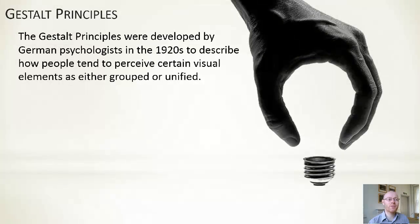So we'll start off first of all looking at the Gestalt principles. They're about a hundred years old. They actually were developed by German psychologists back in the 1920s and they describe how people tend to perceive visual elements based on how objects are positioned relative to one another or their properties in relation to one another.